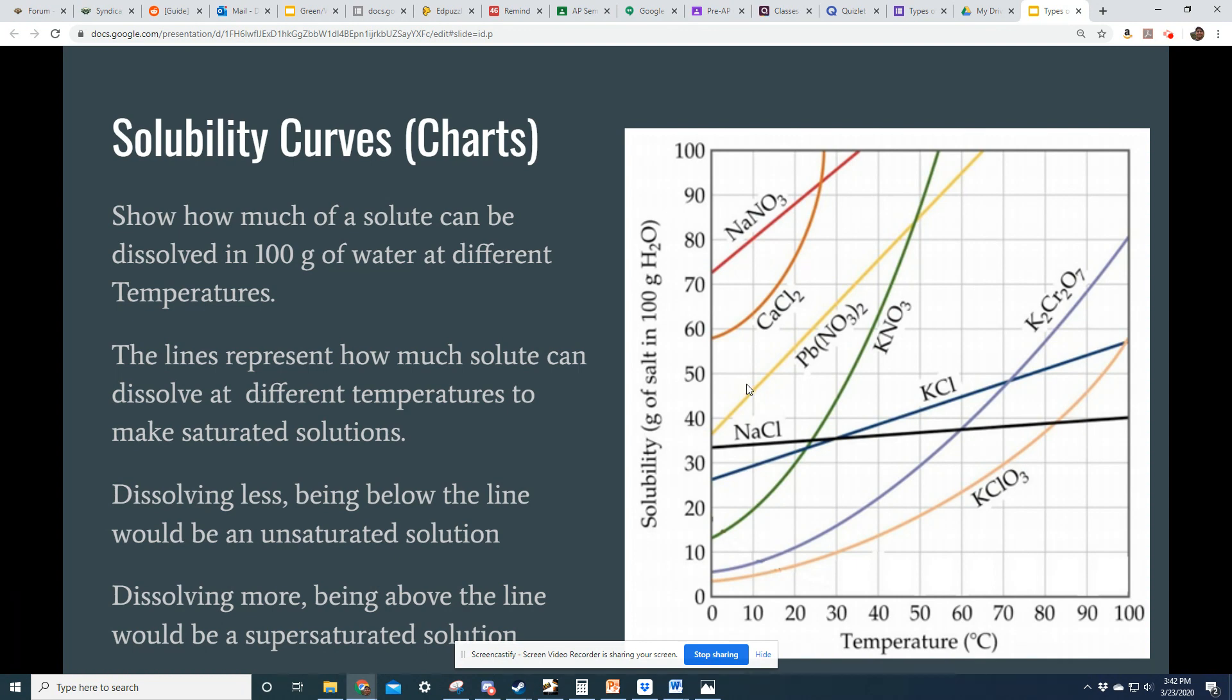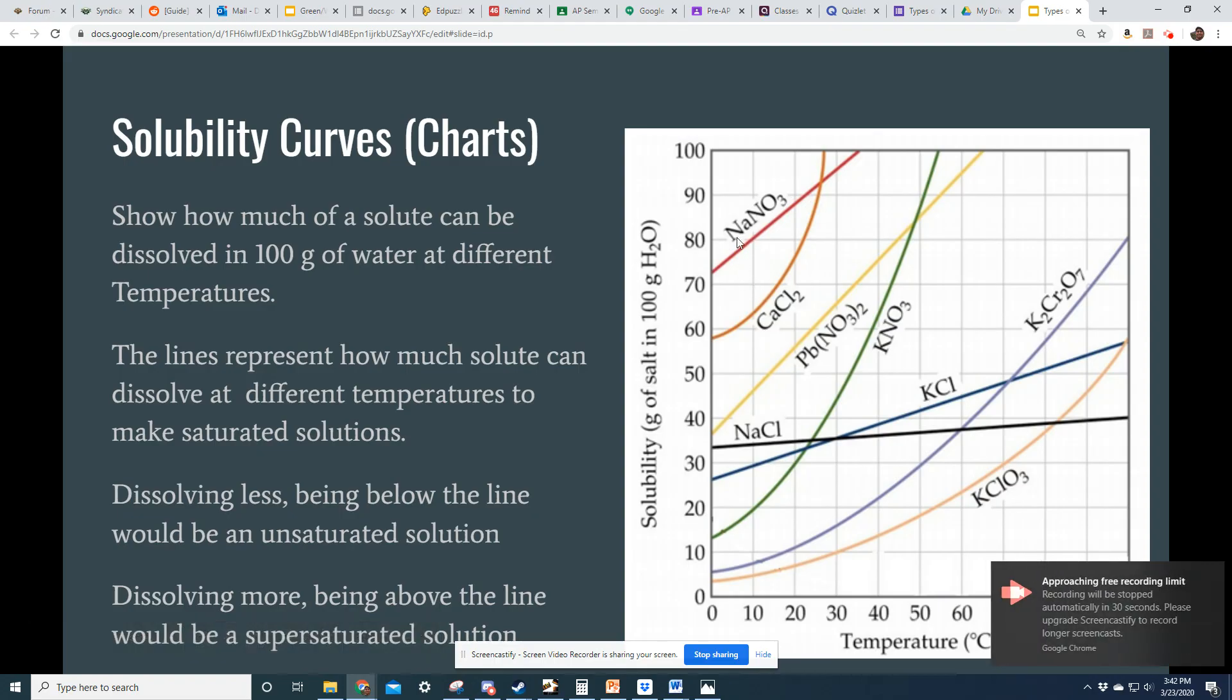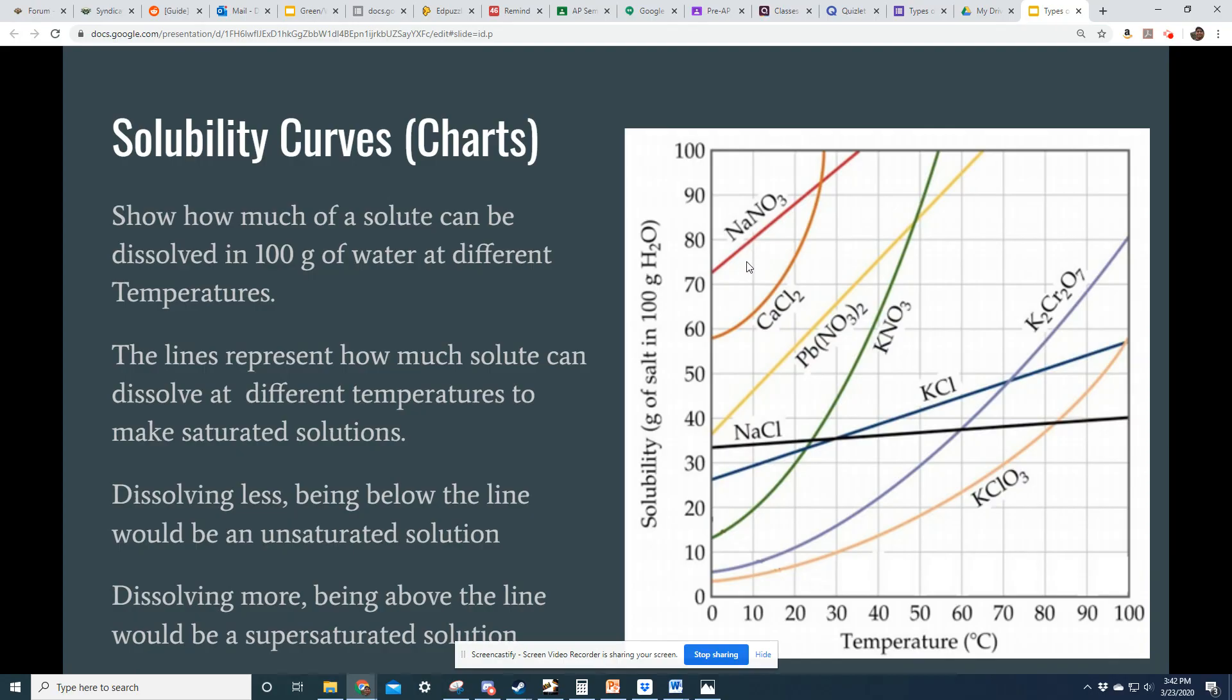It can also help me to classify solutions because if I know the line represents a saturated solution, then if I'm at 10 degrees Celsius and I've dissolved 70 grams of sodium nitrate, this red substance, then I'm below the line, which means I still have room to dissolve more. So under the line would be unsaturated. Anything above the line would be supersaturated.